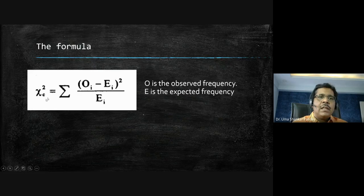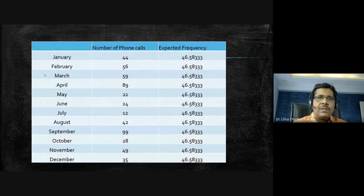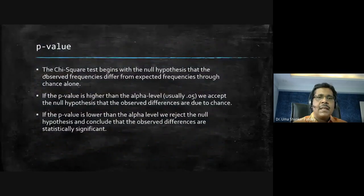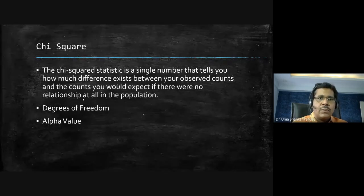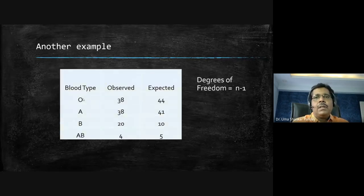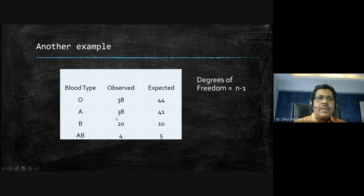The chi-square statistic tells us how much difference exists between observed and expected values. If there is no relation, chi-square will be very small. Now consider a blood type example: a student population shows O=38%, A=38%, B=20%, AB=4%, while the national population has O=44%, A=41%, B=10%, AB=5%.